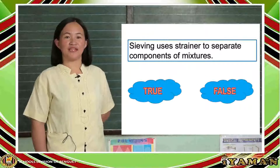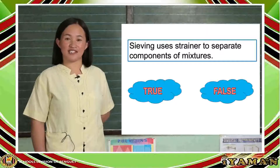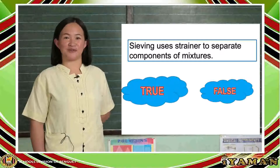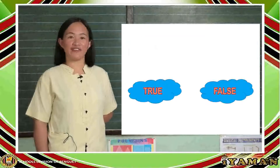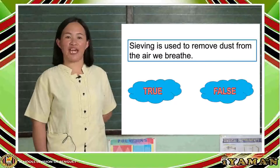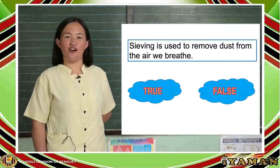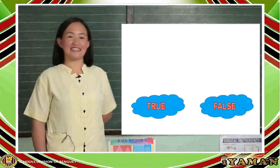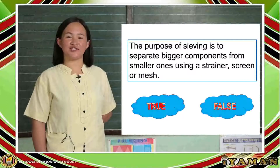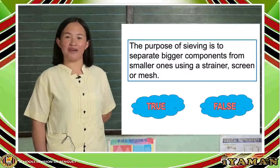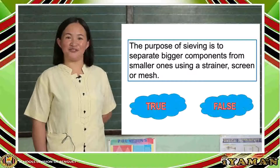Third, sieving uses a strainer to separate components of mixtures. Is this true or false? Nice one, true! Fourth, sieving is used to remove dust from the air we breathe. Nice one, false! Lastly, the purpose of sieving is to separate bigger components from smaller ones using a strainer, screen, or mesh. True! Very good!